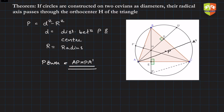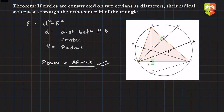Now, H happens to be the orthocentre here. The orthocentre is the point of concurrence of all three altitudes of a triangle. If H is the orthocentre and we want to find the power of point H with respect to a given circle, then H must lie on one of the chords, and that relationship gives us the power of H.